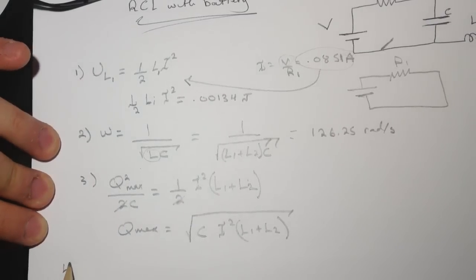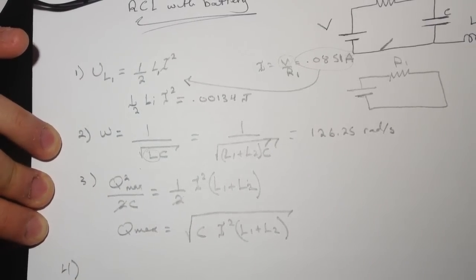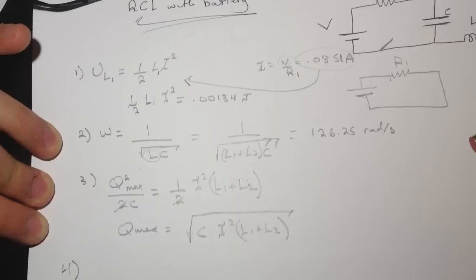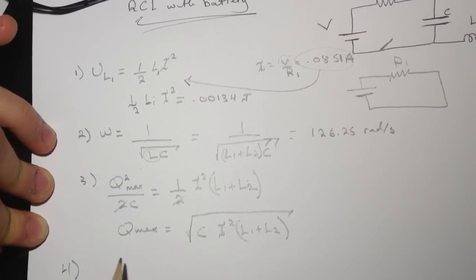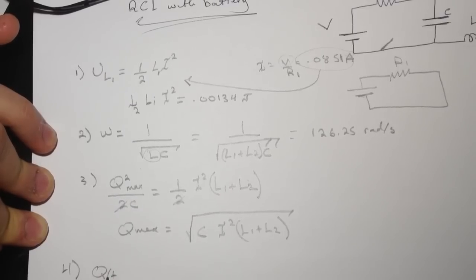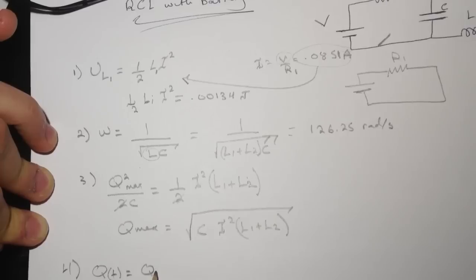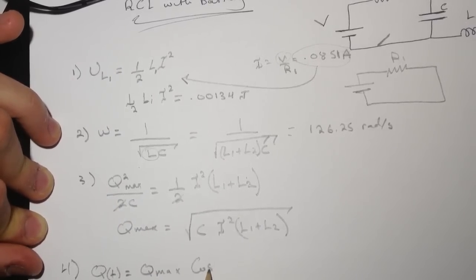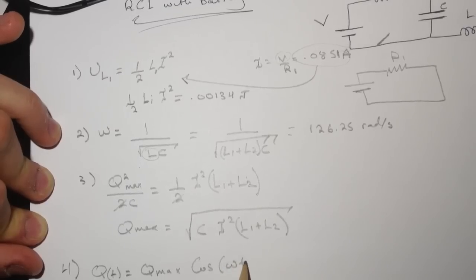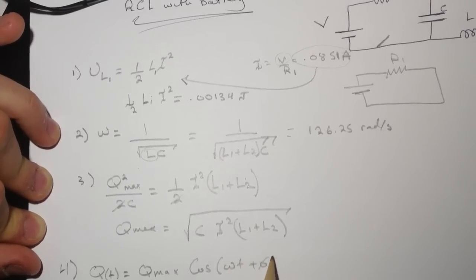Number four, this one took me a little bit of time to figure out because there's the phase and all that thing. So what I did was I'm going to do Q of t equal Q_max and then cosine of omega t plus phi.